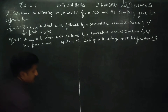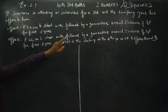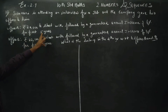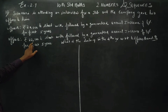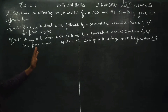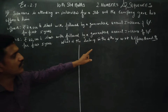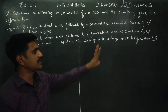Two offers. The first offer has a starting salary of ₹20,000 with an increment. The second offer has a starting salary of ₹22,000. We need to find what the salary will be in the fourth year for each offer.